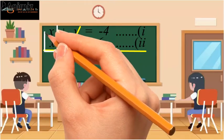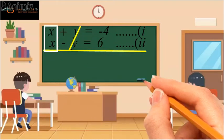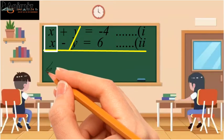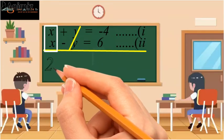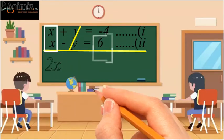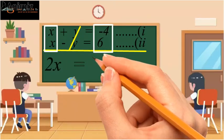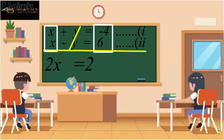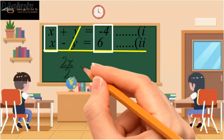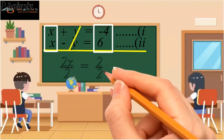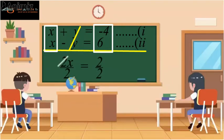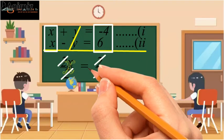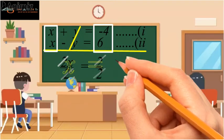So after doing this, we get 2 times x equal to 2. Now dividing each side of this equation by 2, we get x equal to 1. So one of the numbers is x equal to 1.